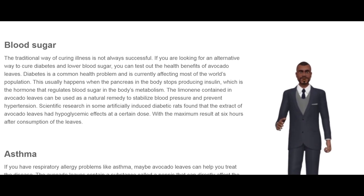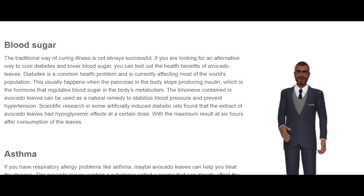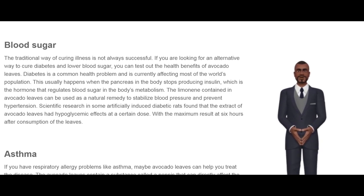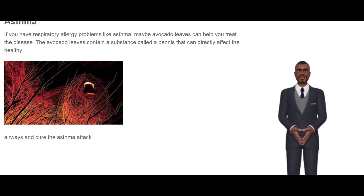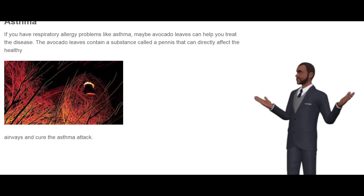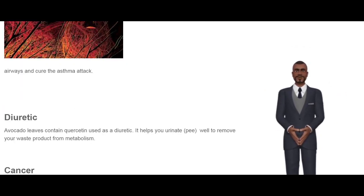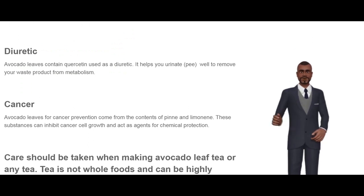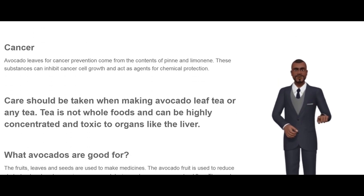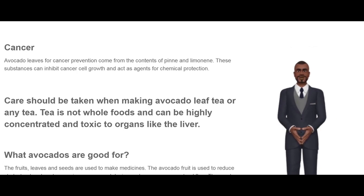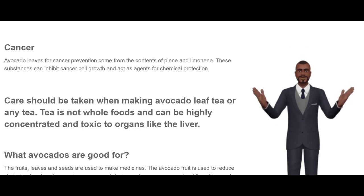Asthma. If you have respiratory allergy problems like asthma, avocado leaves may help you treat the disease. The avocado leaves contain a substance called pinene that can directly affect the airways and help cure asthma attacks. Diuretic. Avocado leaves contain quercetin, used as a diuretic — it helps you urinate to remove waste products from metabolism. Cancer. Avocado leaves for cancer prevention contain pinene and limonene. These substances can inhibit cancer cell growth and act as agents for chemical protection.